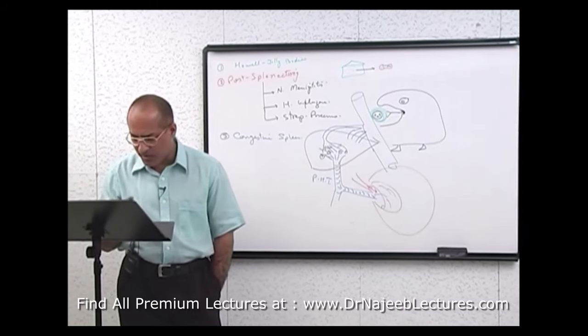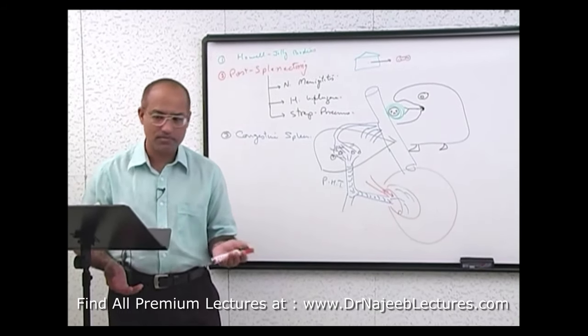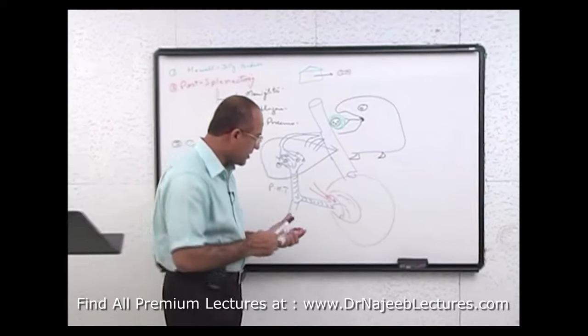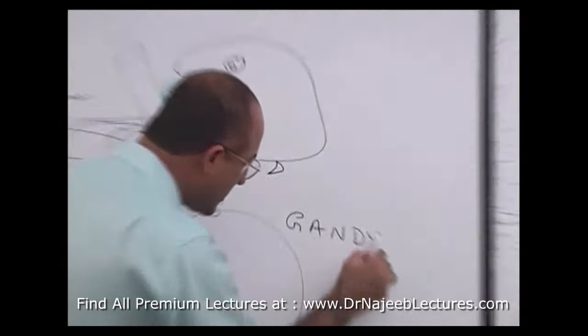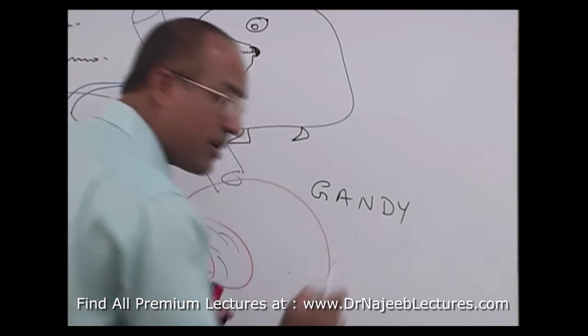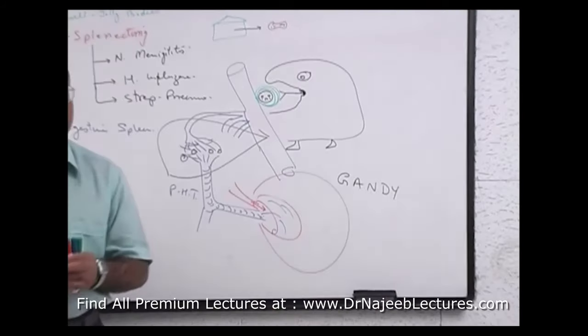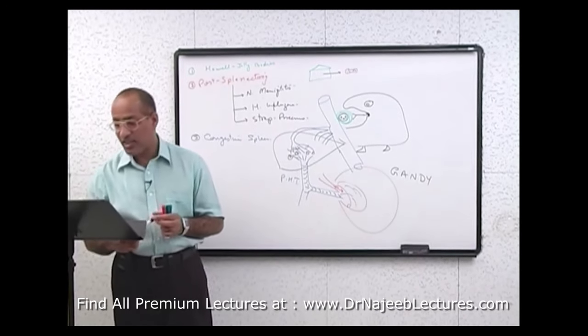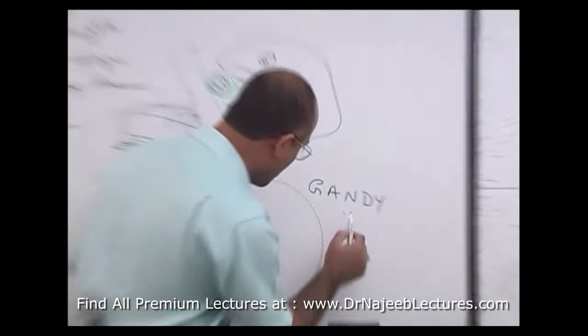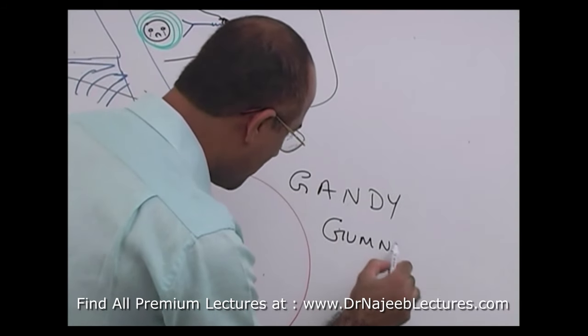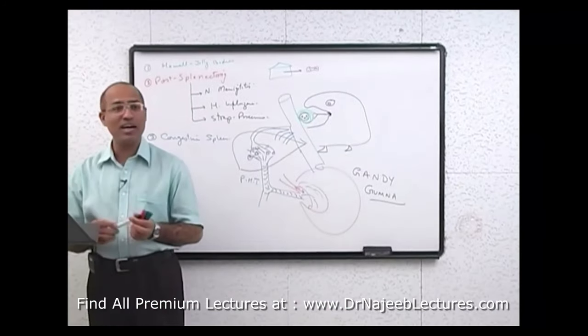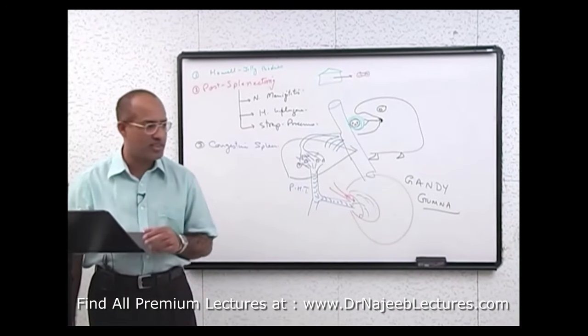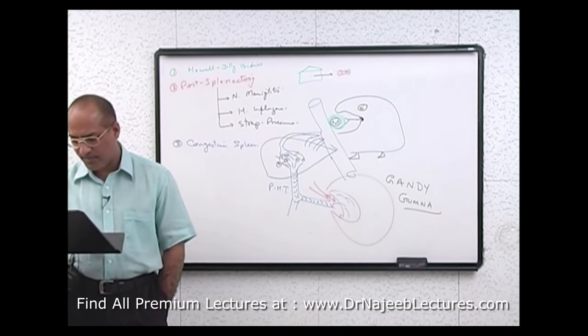These iron and calcium deposits are called, I don't know, it's a funny name. I think I have to see it. Ghamna. I think this should be a name of a girl. Ghamna. Ghandi-Ghamna granules. Ghandi-Ghamna granules. These are granules present, iron and calcium granules with some fibrotic material present in congested, chronically congested spleen.